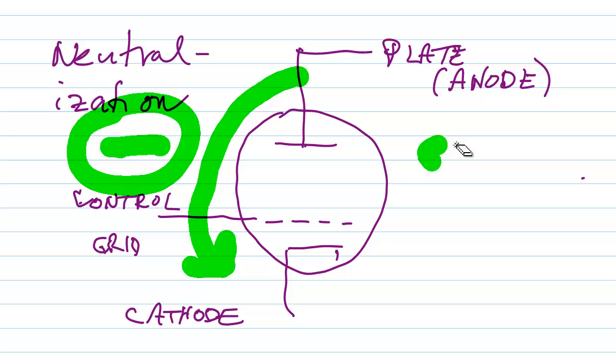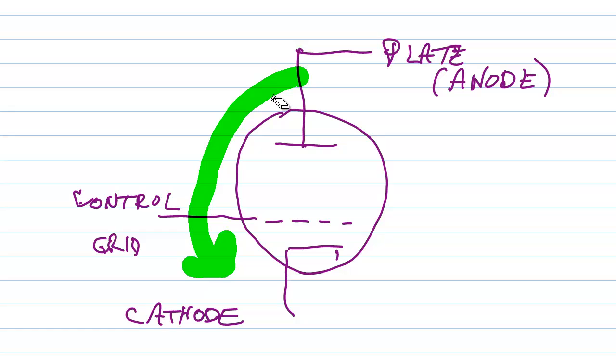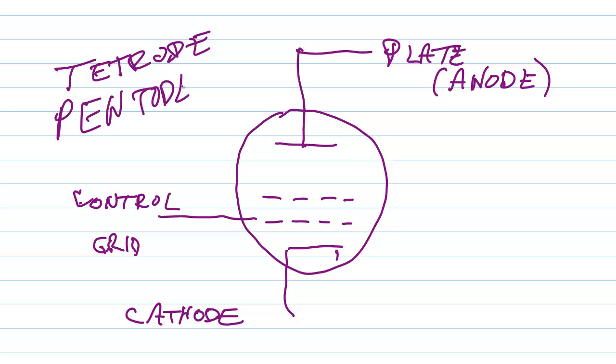But there are other ways to mitigate the risk of parasitic oscillation besides neutralization. One of the more common methods is to use a tetrode, meaning a four element vacuum tube, or a pentode, meaning a five element vacuum tube. Now a tetrode has two grids, a control grid and then also something called a screen grid or just screen.